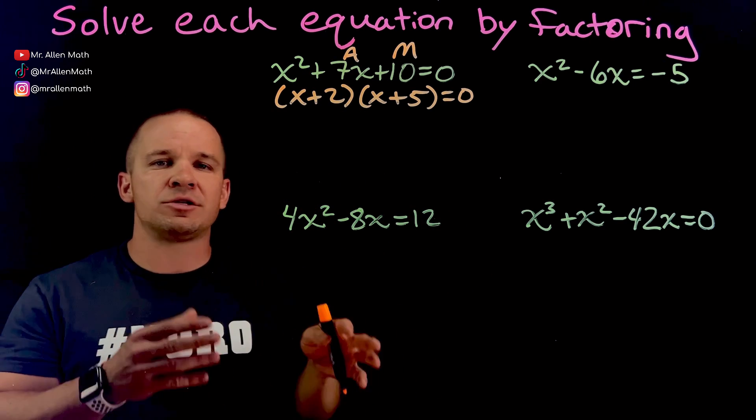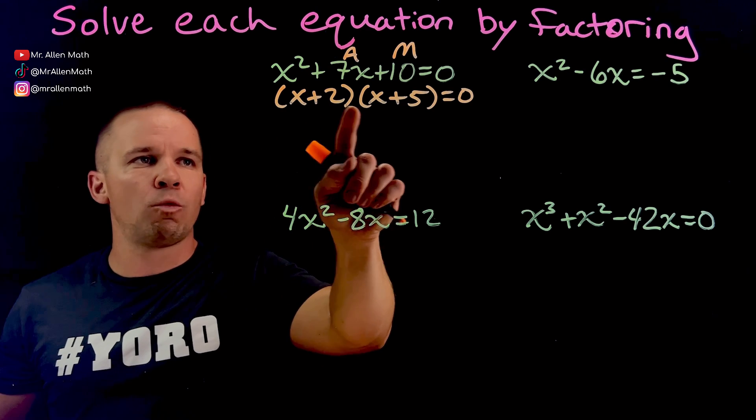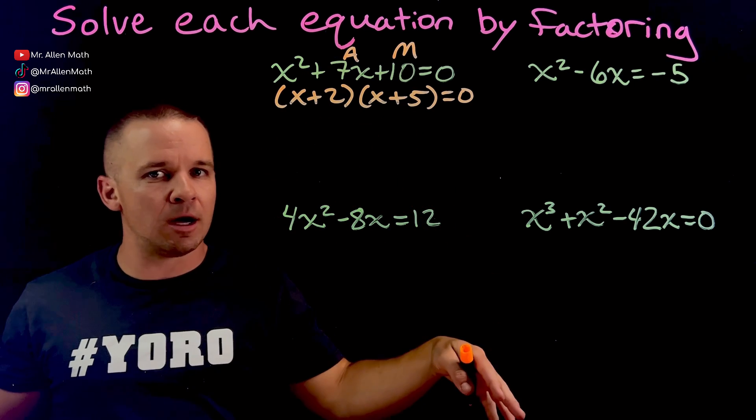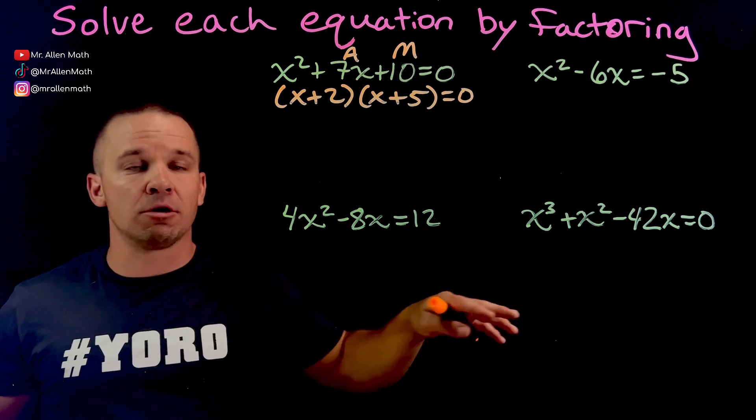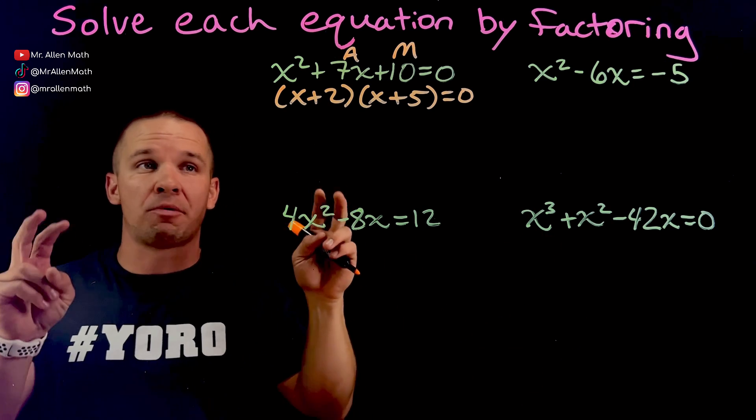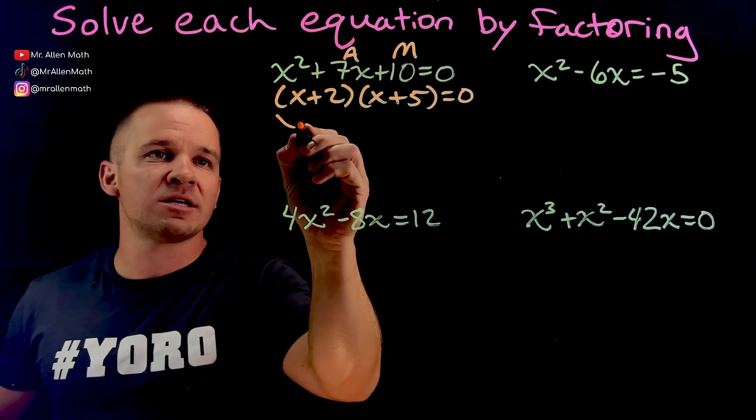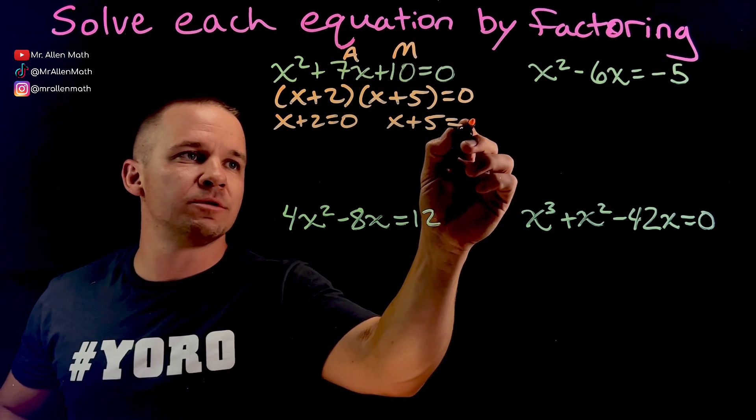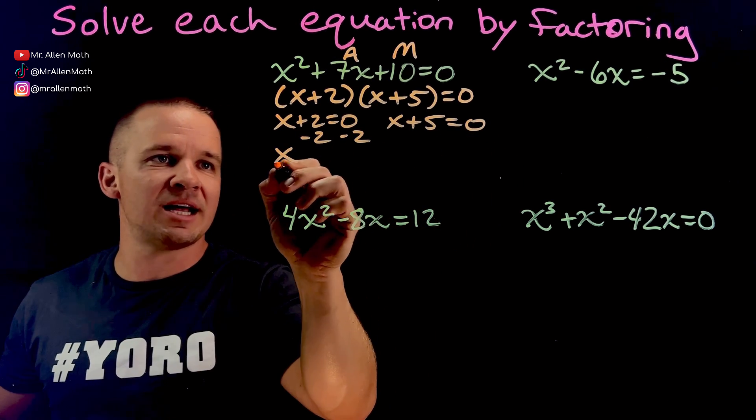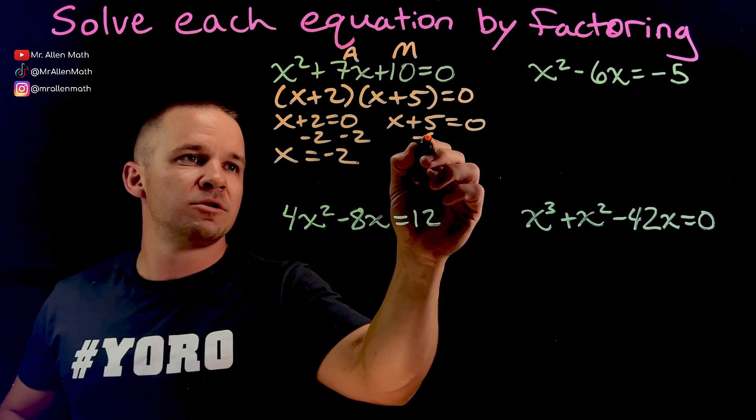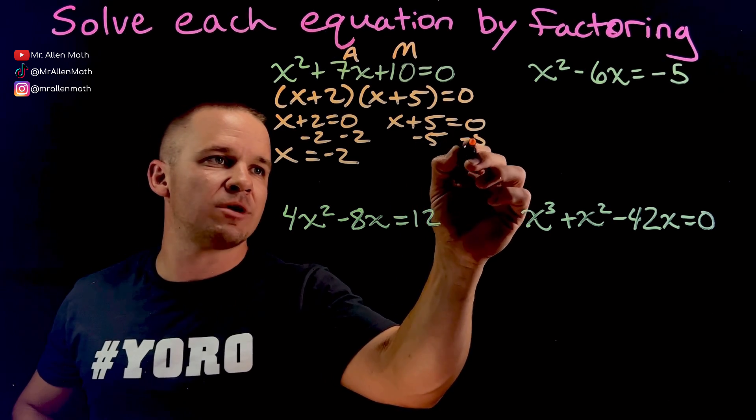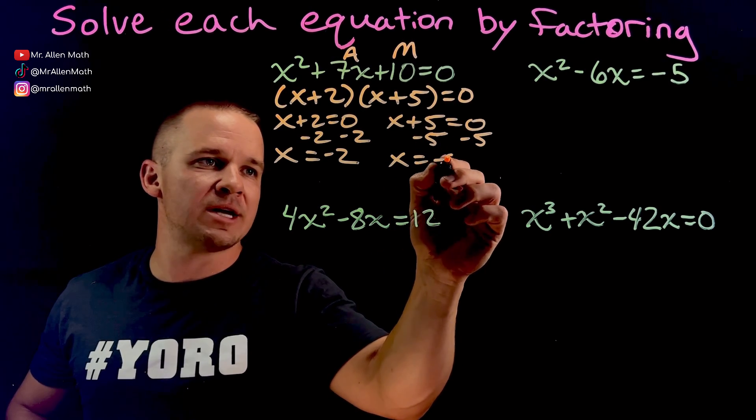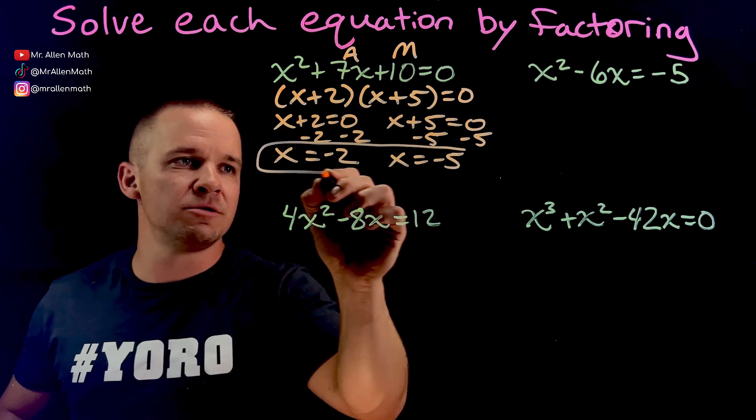Now, how could I use that to my advantage to solve? Well, if I can get either one of these two equal to 0, then the whole thing equals 0 because 0 times anything is 0. It's called the zero product property. So I'm going to set X plus 2 equal to 0 and X plus 5 equal to 0. And when I subtract 2 on both sides, I get X equals negative 2. Do the same thing over here. Subtract 5, I get X equals negative 5.